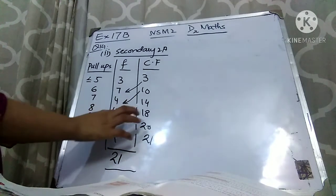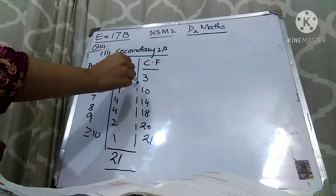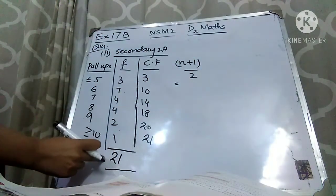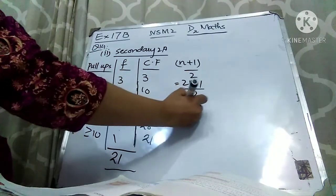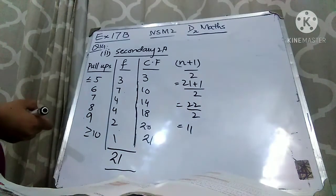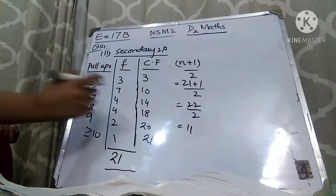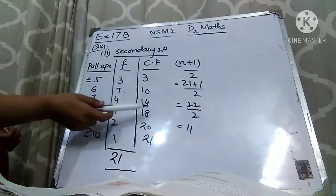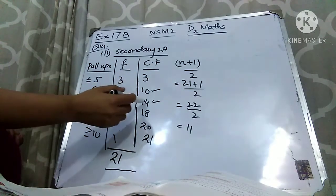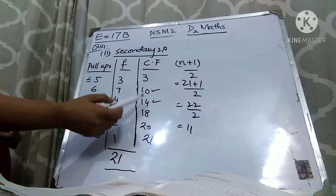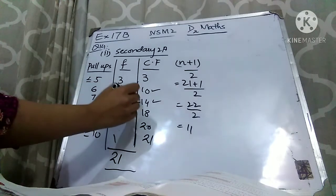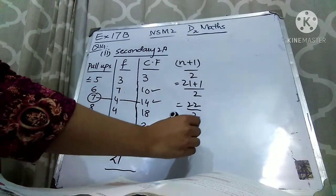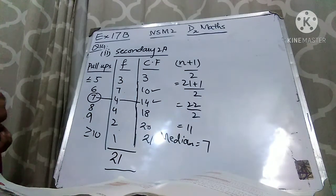Now use the formula (n + 1) / 2 to find which value is the median. With n = 21: (21 + 1) / 2 = 22 / 2 = 11. Look at the cumulative frequency and find where 11 lies. The value 11 falls between cumulative frequencies 10 and 14 — choose the larger one, which is 14. The number of pull-ups corresponding to cumulative frequency 14 is 7. So the median is 7.